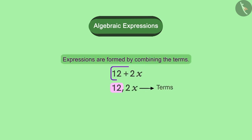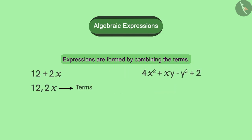So there are two terms, 12 and 2x, in our expression. Now take a look at this expression. Can you tell me how many terms are there in this expression and what are they? This expression is formed by the combination of four terms: 4x², xy, -y³, and 2. We see that the third term is -y³ and not just y³. We studied in our last session that it is necessary to include a minus sign in a term.